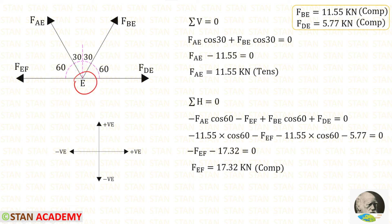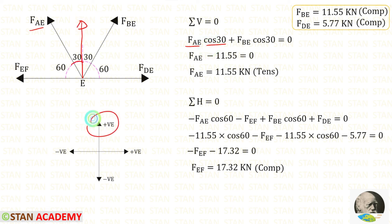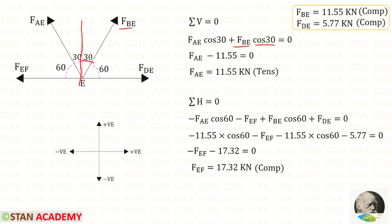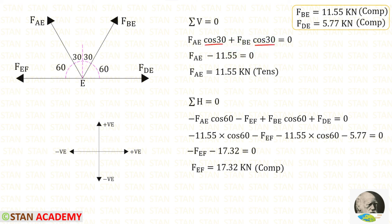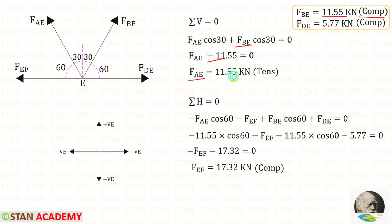At joint E, first we apply the rule Sigma V = 0, because when we apply this rule there will be only one unknown, FAE. FAE is inclined; to make it vertical we need 30 degrees, so we multiply FAE with cos 30. When we make it vertical it will be acting upwards, so it should be applied as positive. FBE is also inclined; to make it vertical we need 30 degrees, so we multiply FBE with cos 30. When we make it vertical it will also be acting upwards, so it is also positive. Cos 30 is common; taking it outside gives 0 divided by cos 30 = 0. FBE is 11.55 and compressive, so we apply it as negative. Finally for FAE we will get a positive value, meaning it is tensile.